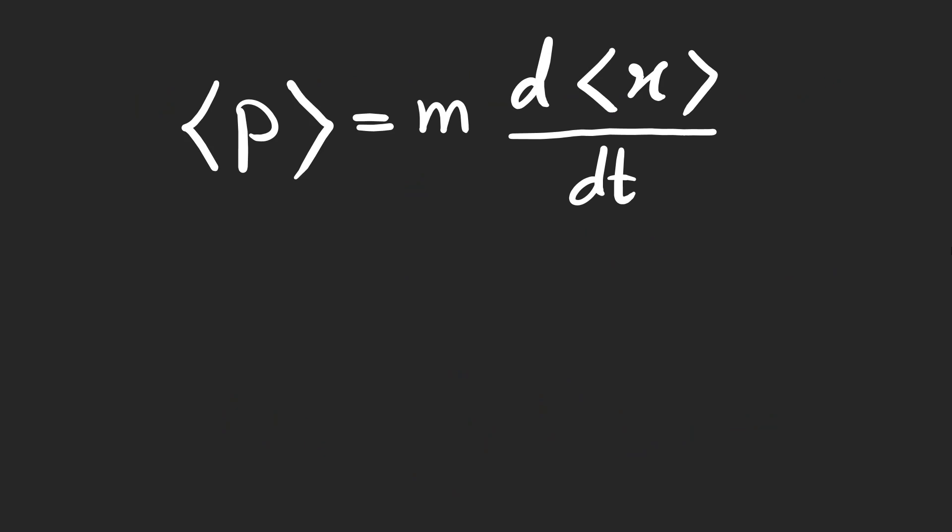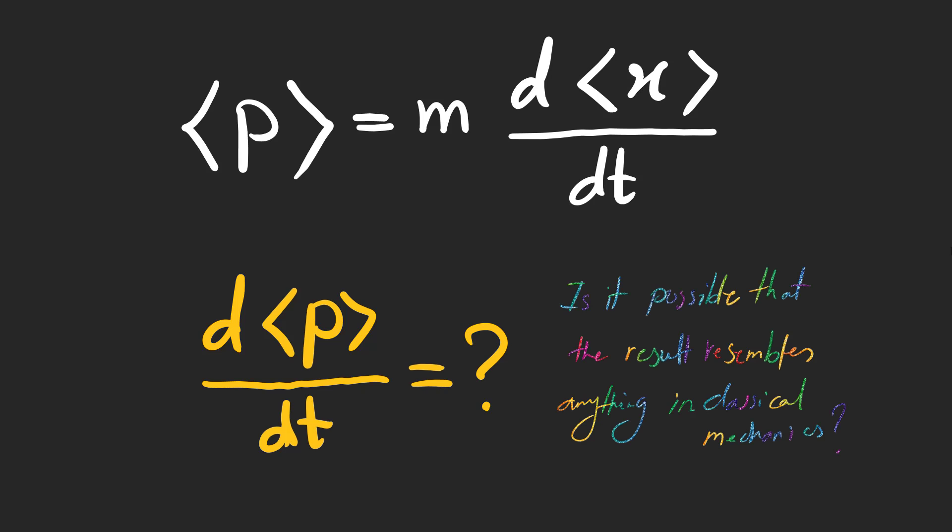So far, we know that the expectation value of momentum is equal to m times the time derivative of the expectation value of position. Now let's calculate the time derivative of momentum and see if it resembles any equation in classical mechanics.